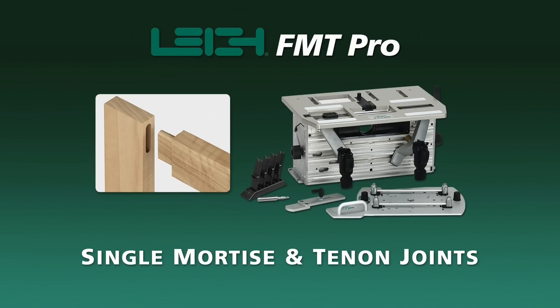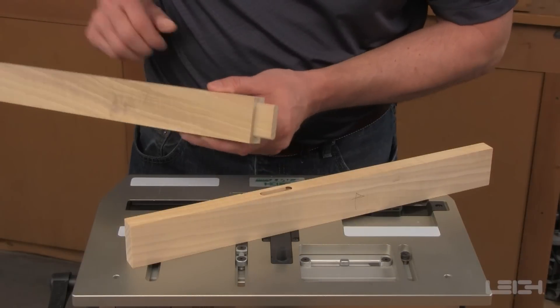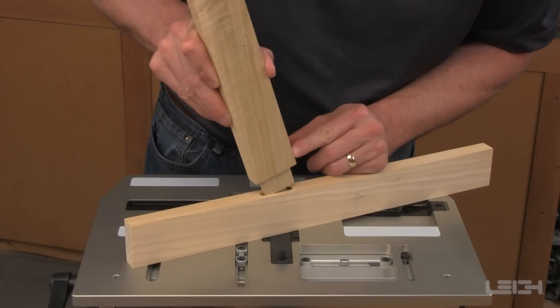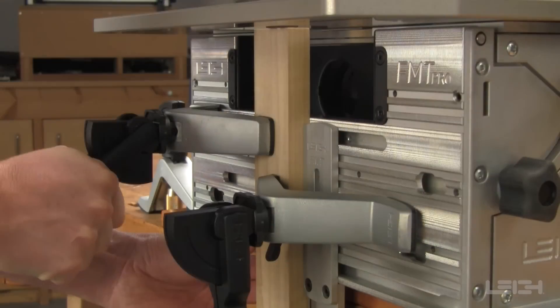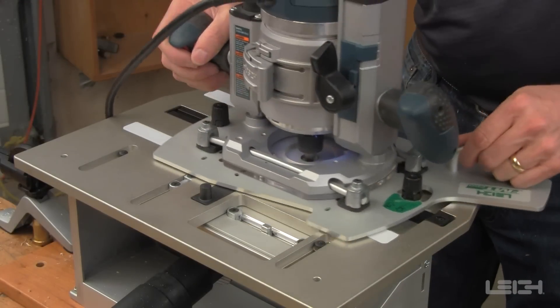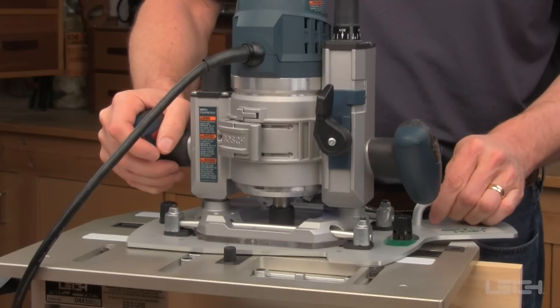How to Route a Mortise and Tenon Joint on the Lee FMT Pro. The FMT Pro makes it easy to route perfectly matching mortise and tenon joints using one guide, one bit and one setup to route both the tenon and the mortise.